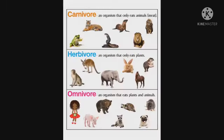Herbivores are organisms that eat only plants. Carnivores are organisms that eat only animals. Omnivores are organisms that eat both plants and animals. I hope you all have understood.